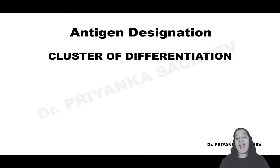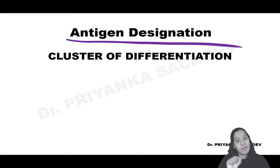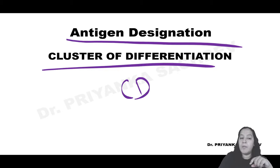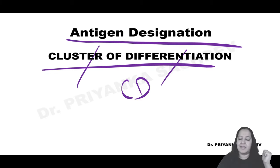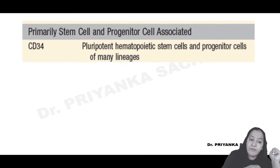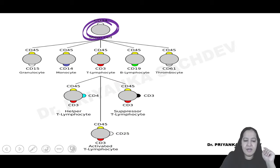One more thing before starting leukemias and lymphomas: antigenic designation, which many students find difficult. All these precursors have peculiar antigens on their surface, and based on those antigens they are identified. These are known as CD markers - CD stands for 'cluster of differentiation'. CD34 is the marker of the hematopoietic stem cell. All hematopoietic stem cells are CD34 positive - this MCQ is asked many times. You can see here it is CD34 positive on the hematopoietic stem cell.